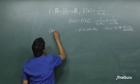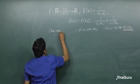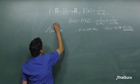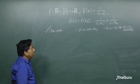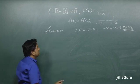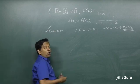Since f(x₁) = f(x₂) implies x₁ = x₂, this function is definitely 1-1. Next, let's check for onto.